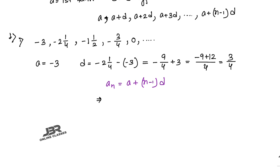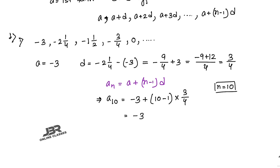For the 10th term: a_10 = −3 + (10−1) × (3/4) = −3 + 9 × (3/4) = −3 + 27/4 = (−12 + 27)/4 = 15/4. So the 10th term is 15/4.